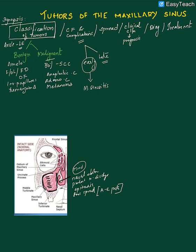The superior wall of the maxillary sinus is related to the orbital floor. Tumors spreading to the superior wall can present with ocular pain, proptosis, diplopia or double vision, and increased tear secretion from the eyes, known as epiphora.